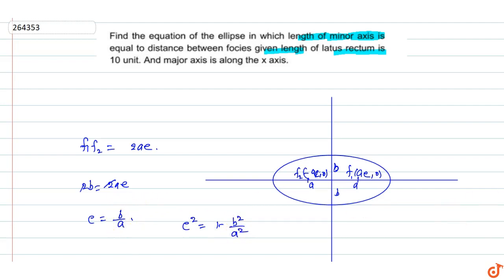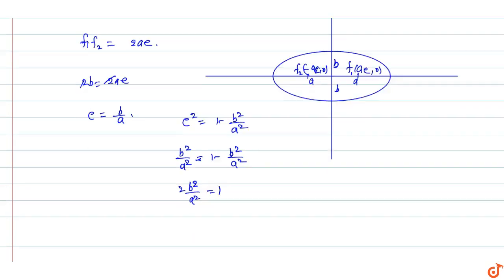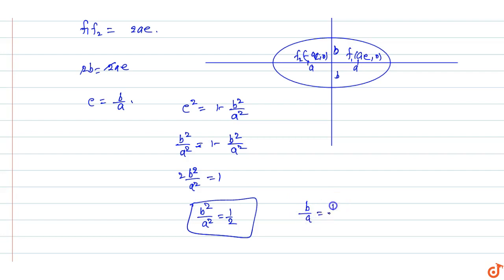Since e = b/a, we have e² = b²/a². Substituting: b²/a² = 1 − b²/a², so 2·(b²/a²) = 1, which gives b²/a² = 1/2. Therefore b/a = 1/√2, so the value of b by a is one by root two.